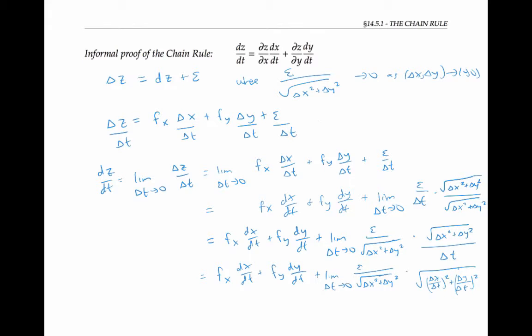As delta t goes to zero, this expression is going to zero by the assumption that f is differentiable. And this expression is just going to the square root of dx/dt squared plus dy/dt squared. This is an expression having to do with arc length. But the important thing for us is that it has a finite value. If we have something that's going to zero times something that's going to a finite value, that's just zero. And therefore, our dz/dt is just f sub x dx/dt plus f sub y dy/dt as wanted.